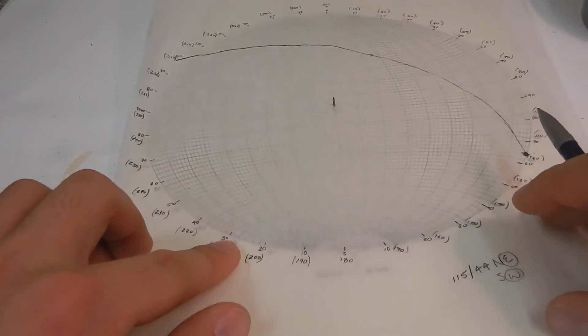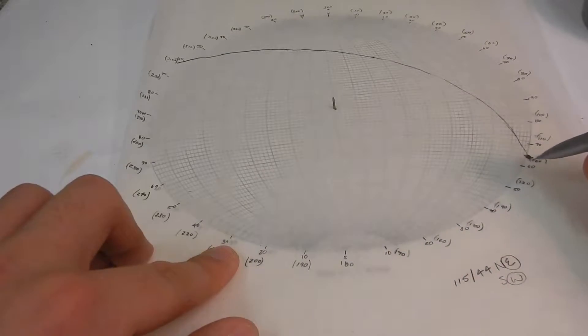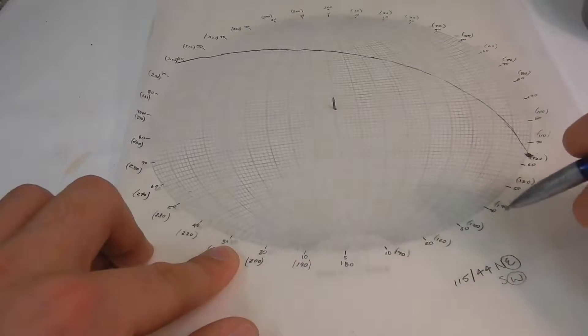Let's go back again and check our dip measurement. We had 115 strike down here, 44 degrees to the northeast.